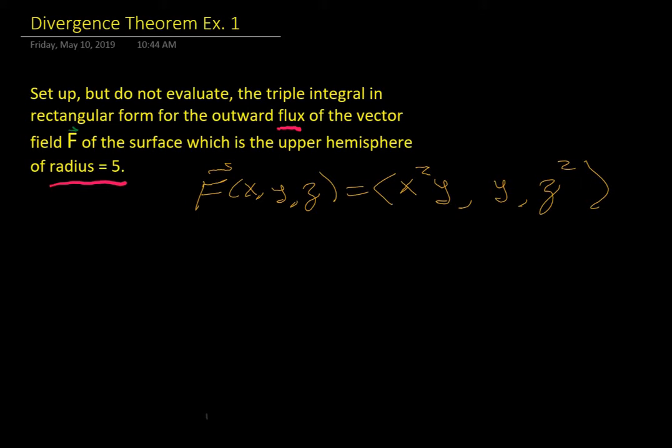So the vector field is given here, x squared y comma y comma z squared. So that's provided. So we need a couple pieces of information to do this.